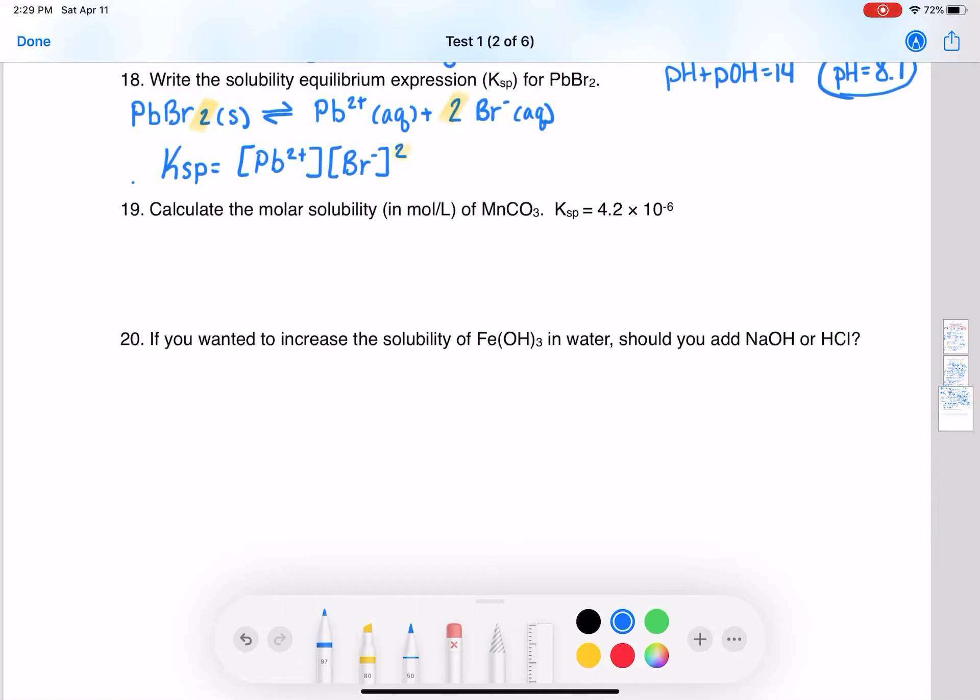Problem 19: Calculate the molar solubility of MnCO3. Again, we need to do an ICE table. So we need a balanced equation: MnCO3 solid in equilibrium with Mn2+ and CO3 2-.